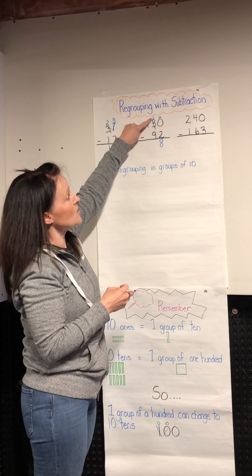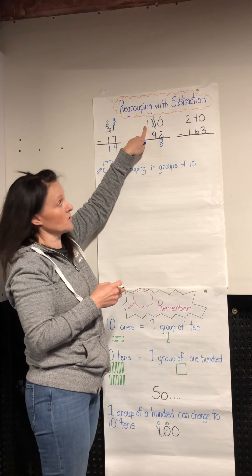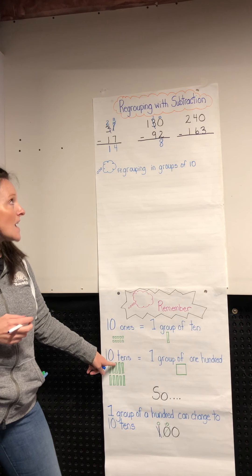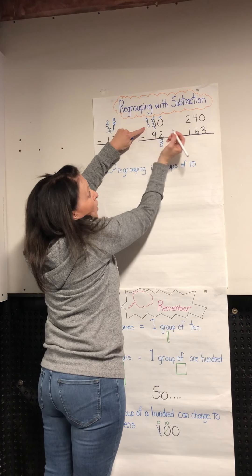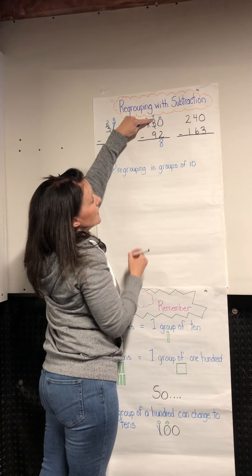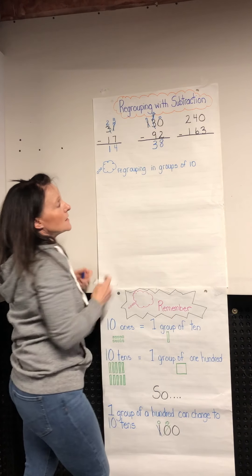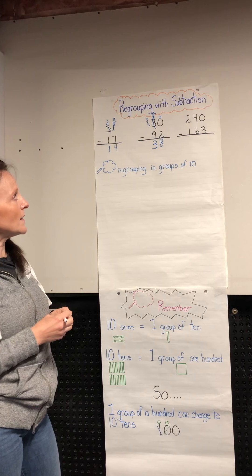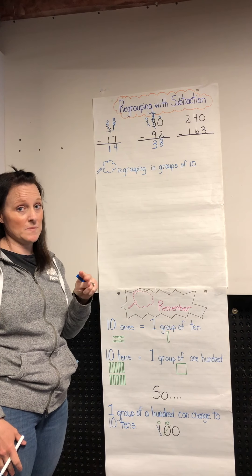Now I go into my tens column and it says to take away nine. I can't do that, so I go to my hundreds column. One group of a hundred is the same as ten tens. If I borrow a group of a hundred — there was one there, so now there's zero — I bring over the ten tens. I had ten and I had two, so now I'm at twelve. Twelve take away nine is three, and zero take away zero is zero.